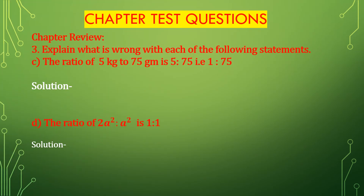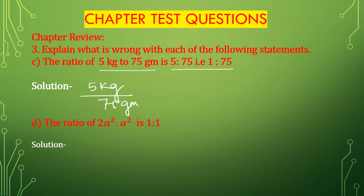Now third bit C: The ratio of 5 kg to 75 gram is stated as 5 is to 75, that is 1 is to 75. Here both are not in equal units because the antecedent is in kg and the consequent is in grams. First we have to convert this kg into grams.